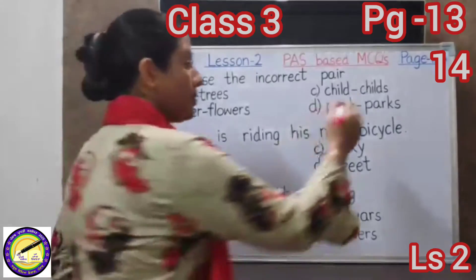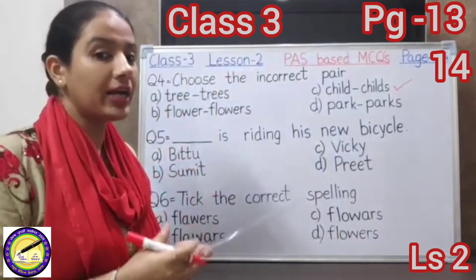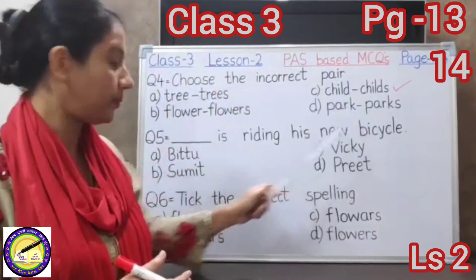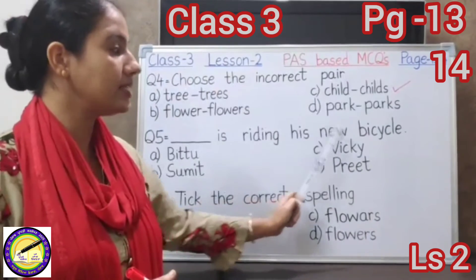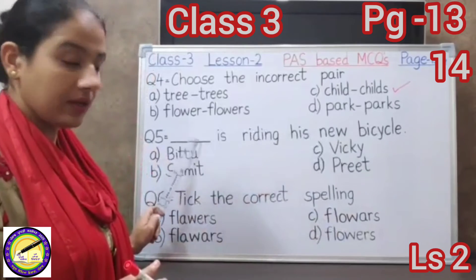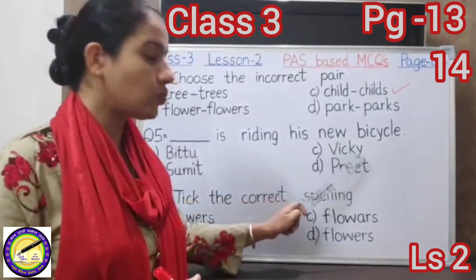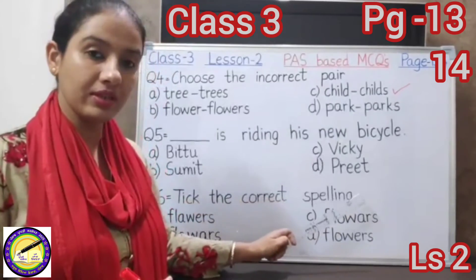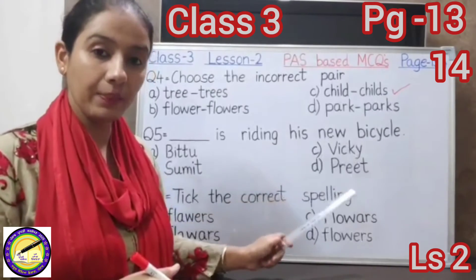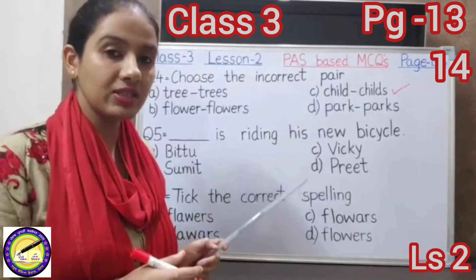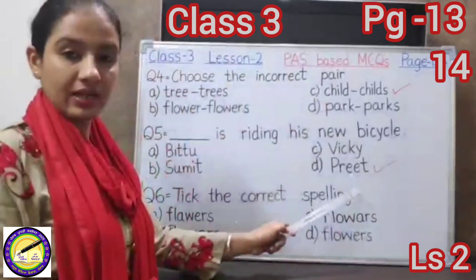The next question is: dash is riding his new bicycle — which name goes in the blank? The options are: A — Bittu, B — Sumit, C — Vicky, D — Preet. Bittu, Sumit, Vicky, or Preet? Yes, we have read in the chapter that Preet is riding his new bicycle. So D — Preet — is the correct option.